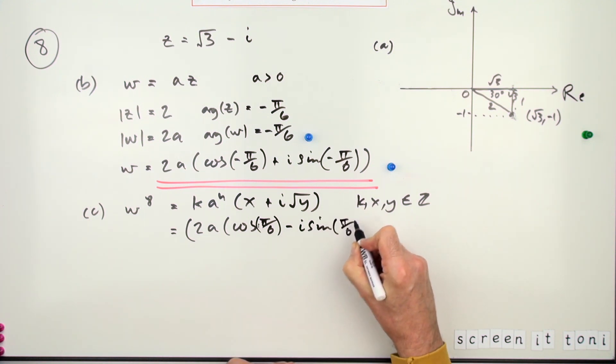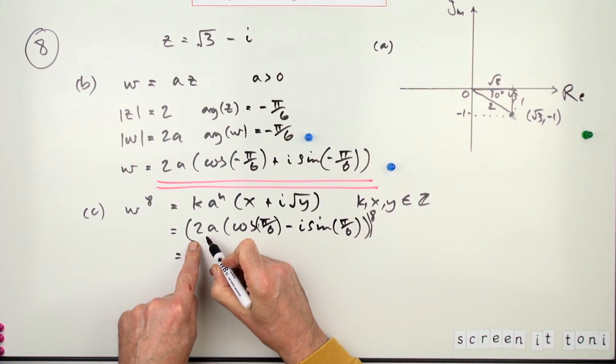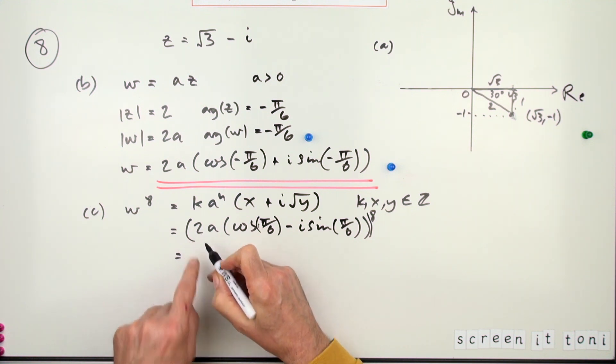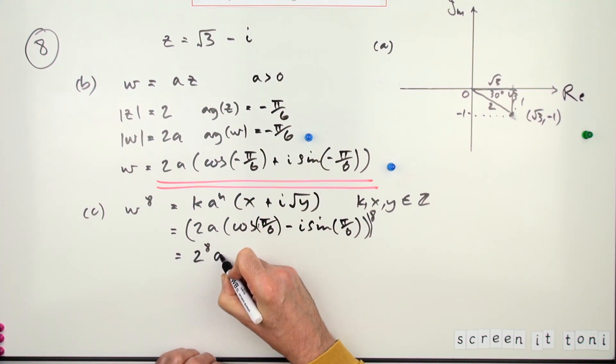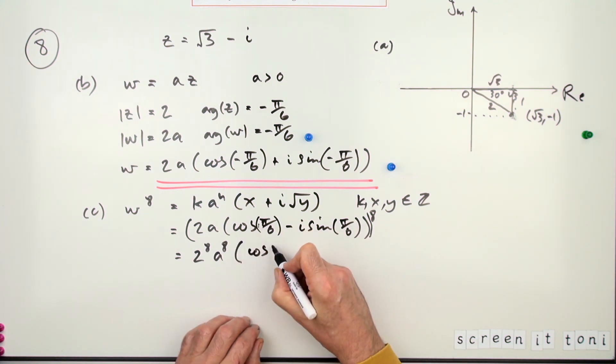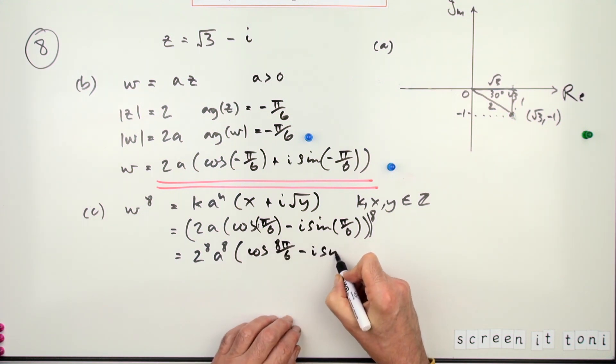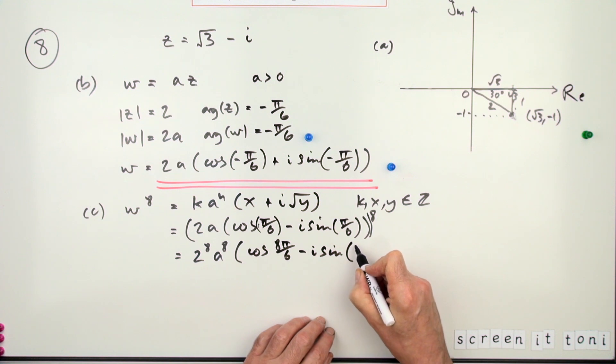π upon six, all to the power eight. So that would be—I don't have enough brackets there—eight times... sorry, this to the power eight. So that'll be 2 to the power 8, a to the power 8, times the cosine of eight times this—is 8π upon 6—minus i·sine, and for that part again it's going to be 8π upon 6.